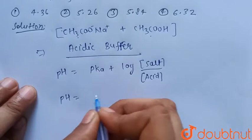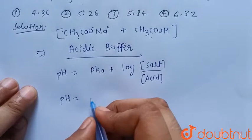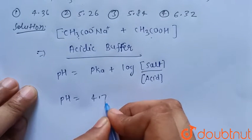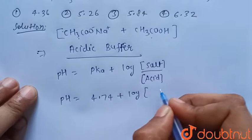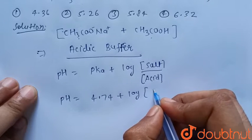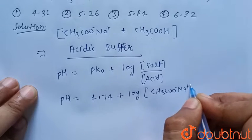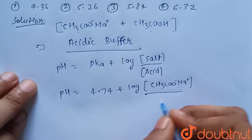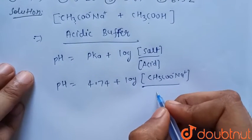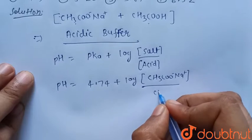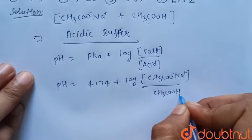Here, pKa is given as 4.74. The salt is sodium acetate (CH3COO- Na+) and the acid is acetic acid (CH3COOH). We need the ratio of their concentrations.